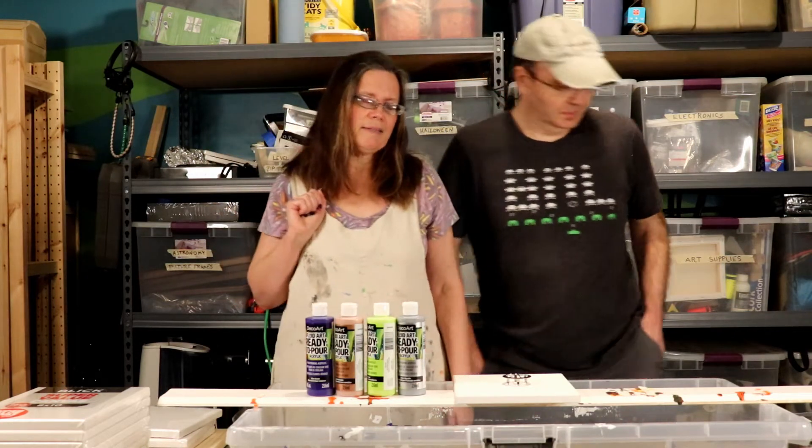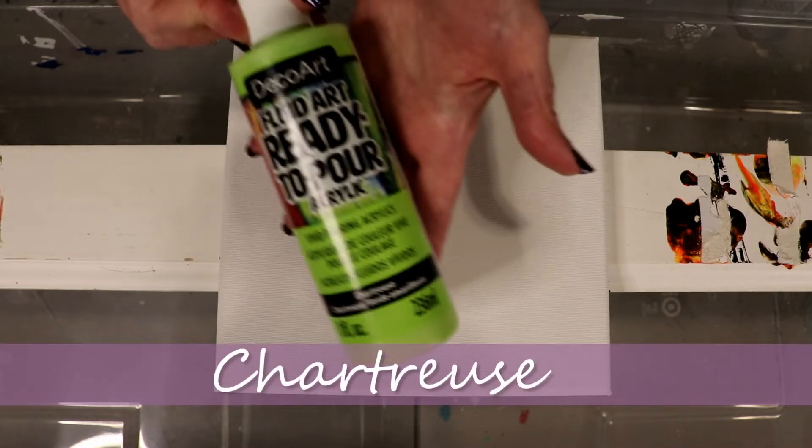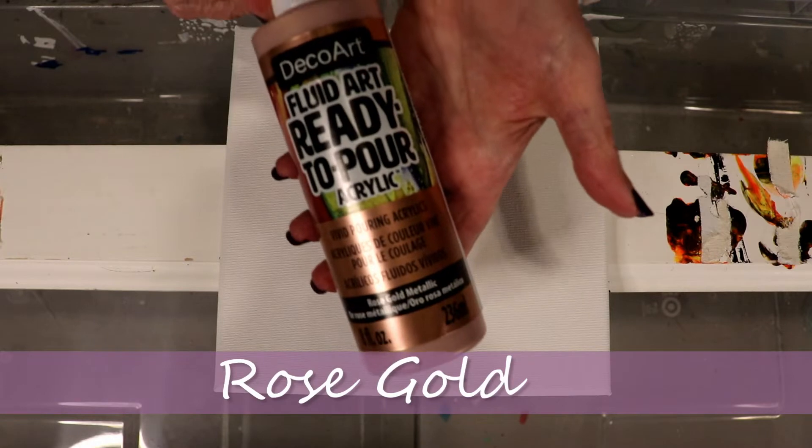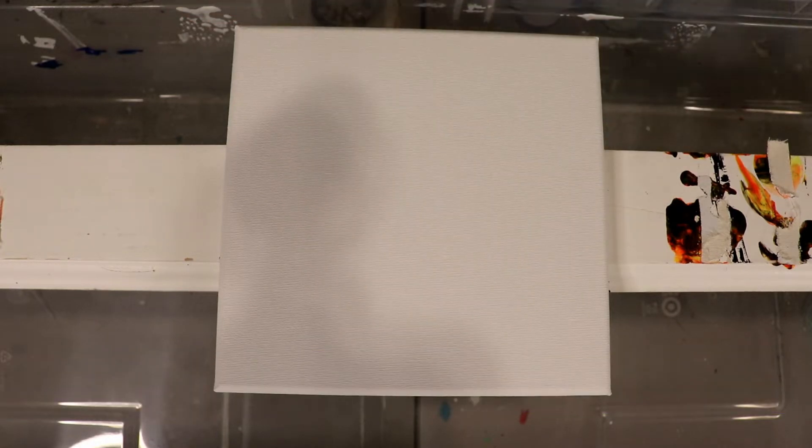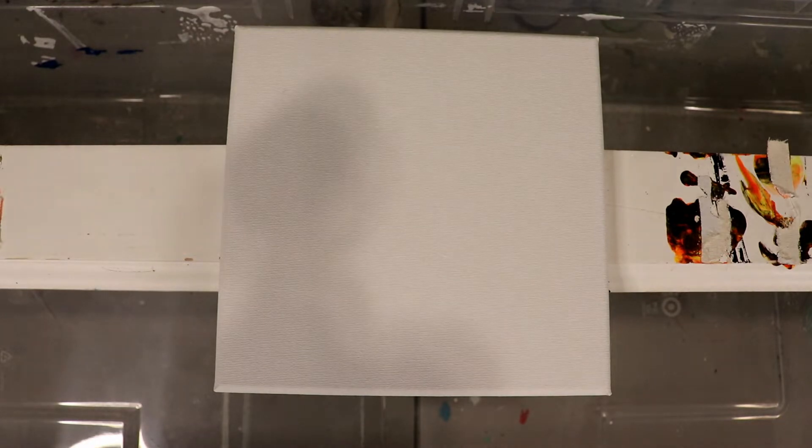The colors that we have to use are blue violet, chartreuse, rose gold, and silver. These are all by DecoArt Fluid Art ready-to-pour acrylic. Which do we think should be our background color? What do you think about the blue violet? Okay.